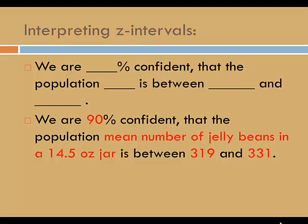For example, we are 90% confident that the population mean number of jelly beans in a 14.5 ounce jar is between 319 and 331.